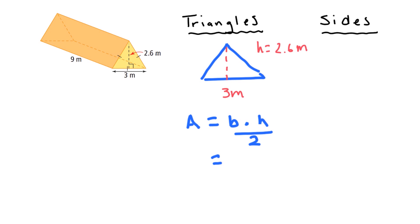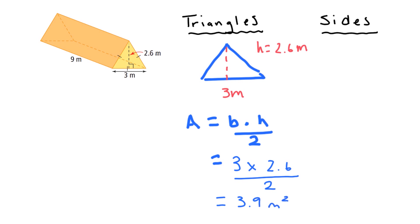Let's fill in the numbers. My base is 3, my height is 2.6, so: area equals 3 times 2.6 divided by 2. When I do this calculation I get 3.9 meters squared. Again, we're dealing with area so the units are squared. That is the area of one triangle — and since I have two identical triangles, I can multiply by 2 to get the total.